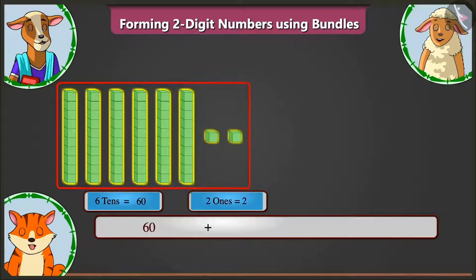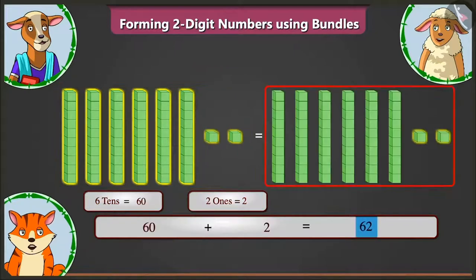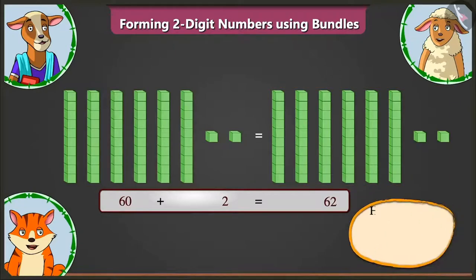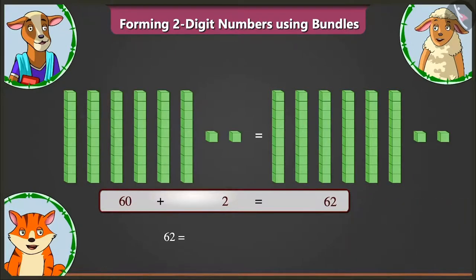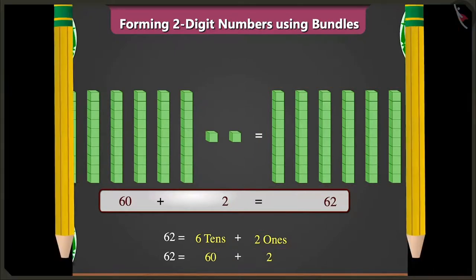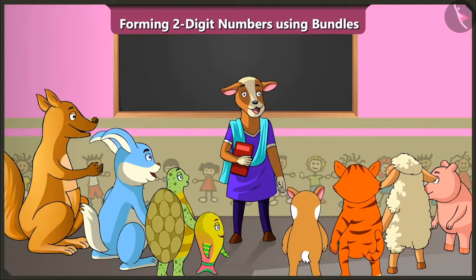Now, adding two to sixty, here we have sixty and two, giving us number sixty-two. Now, how will you expand sixty-two into two parts? Sixty-two means six tens and two ones. That means the two parts will be sixty and two. Absolutely right, Billy.